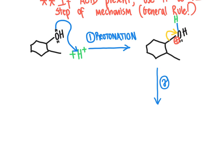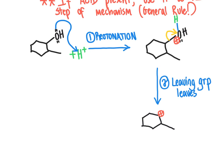A better leaving group leaves faster, speeding up the entire reaction. Step two: the leaving group leaves. The protonation step at step one primed the reaction, enabling water to act as a leaving group, making step two much less of a bottleneck. Step two is now the rate-limiting step where the leaving group breaks away. Once it leaves, we have a carbocation intermediate and water as a product.